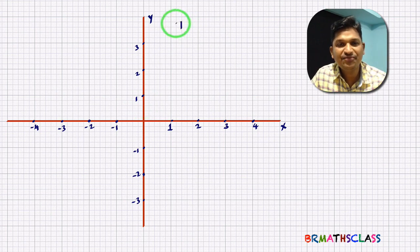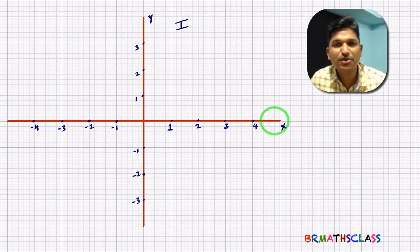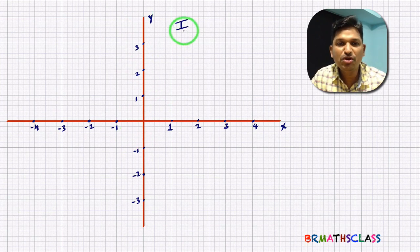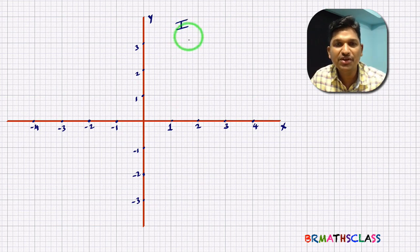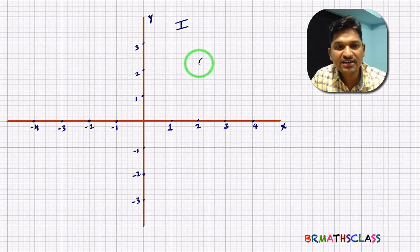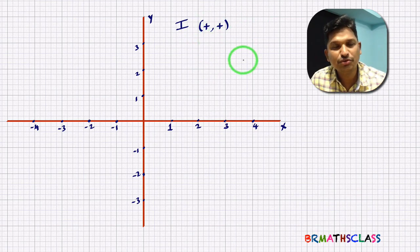This is the first quadrant. The first quadrant is formed with the positive x-axis and the positive y-axis. That's why, in the first quadrant, if you take any point, its x-coordinate is positive — because it is formed with the positive x-axis — and its y-coordinate is also positive.